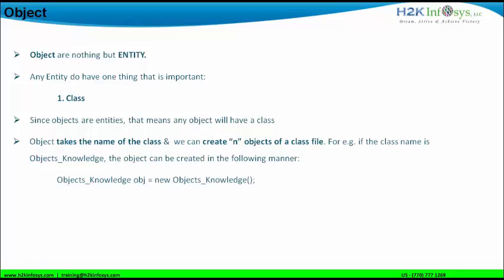The example given here is for a class file called objects_knowledge. This is how we create the object: we define objects_knowledge and a reference variable called obj, equal to new — the keyword used — followed by objects_knowledge and a parenthesis followed by a terminator sign. When we use the keyword new, that actually creates the object. The class file name is objects_knowledge, and obj becomes the reference variable referring to the object of the class file.